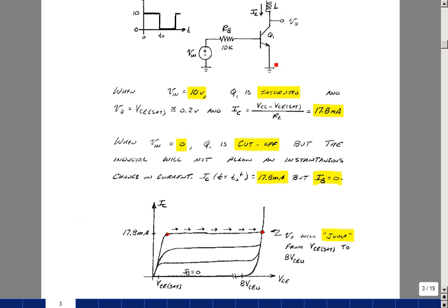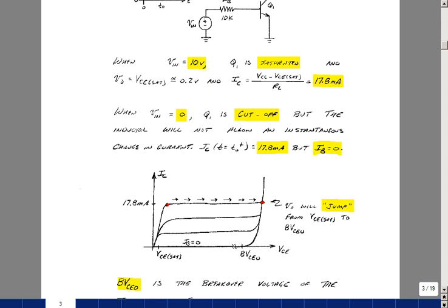That current is flowing into an open circuit. But as we talked about in class, there's a break over voltage associated with the transistor. So we're sitting at saturation at about 17.8 milliamps, and then we literally jump to this point on the curve where the base current is 0, but also goes running off to a high value of current.